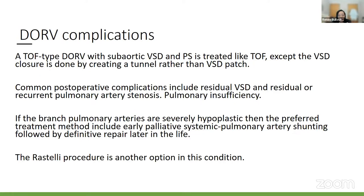In adulthood, the tetralogy of Fallot-type DORV with subaortic VSD and pulmonary stenosis presents similarly to tetralogy of Fallot, but VSD closure is done by creating a tunnel rather than a VSD patch. Post-operatively, these patients can present with residual VSD, recurrent pulmonary artery stenosis, and pulmonary valve insufficiency. If branch pulmonary arteries are severely hypoplastic, early palliation with systemic-to-pulmonary artery shunting followed by definitive repair in childhood is preferred. The Rastelli procedure — closure of the VSD patch, connecting the aorta to the LV and the pulmonary artery to the RV — is another option.